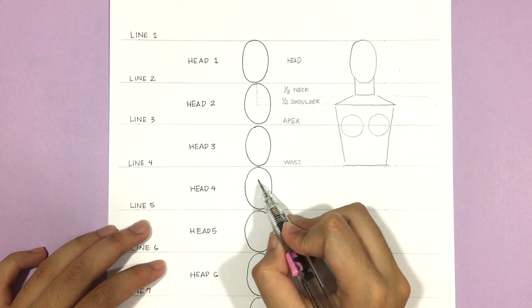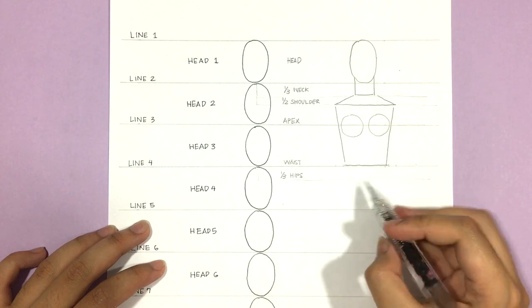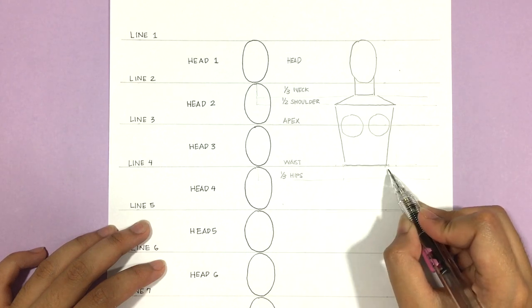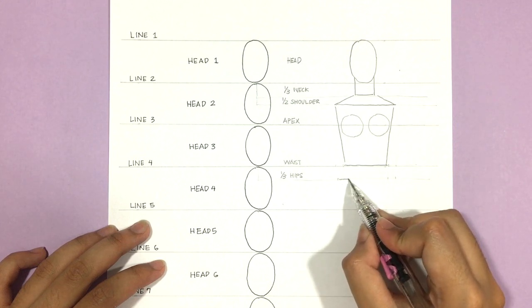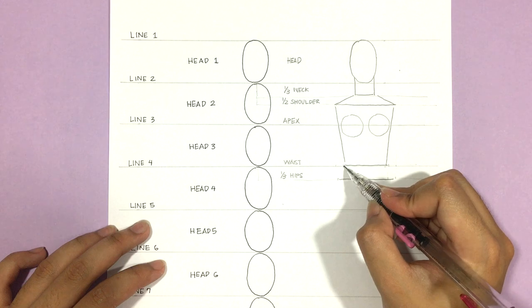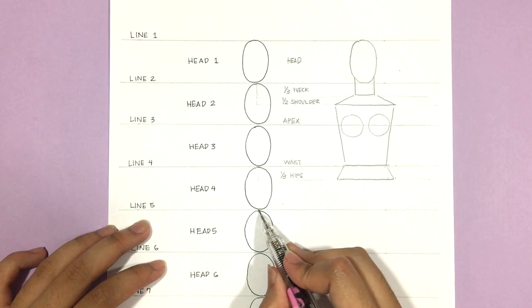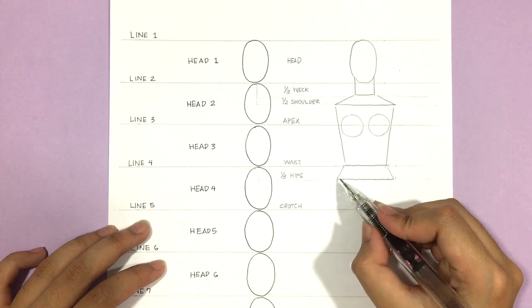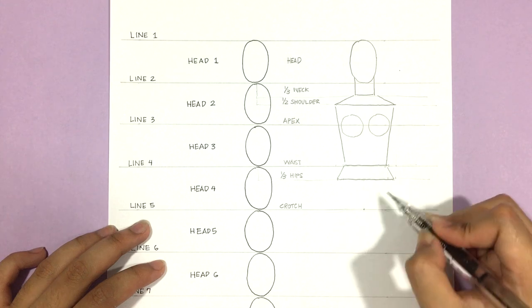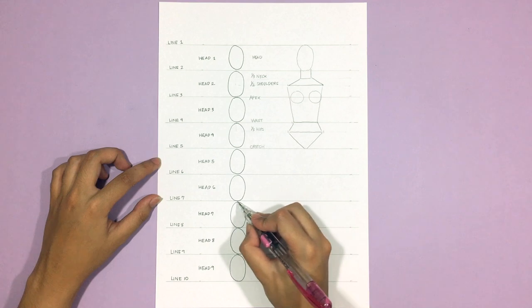Then a third of head four is for the high hip line. And as you see me do before, I am connecting the previous line to this new line. And it creates a trapezium shape since the ideal hips are wider than the waist. Then the top of head five is where the crotch is. So I'm just drawing a triangle from the hip line to this point.